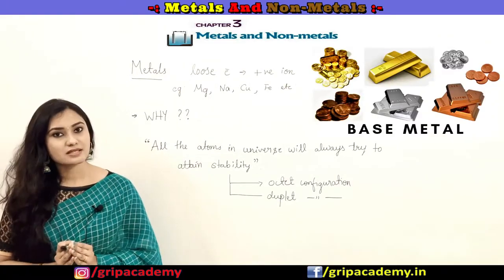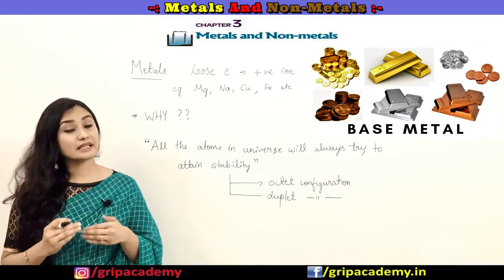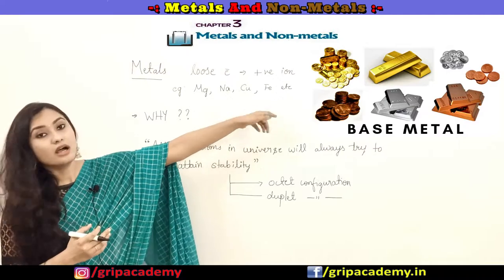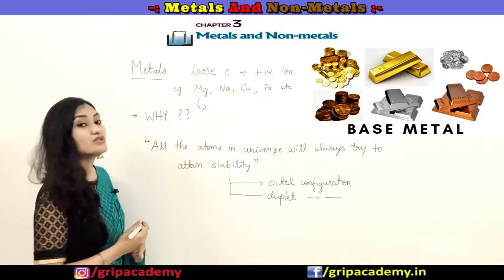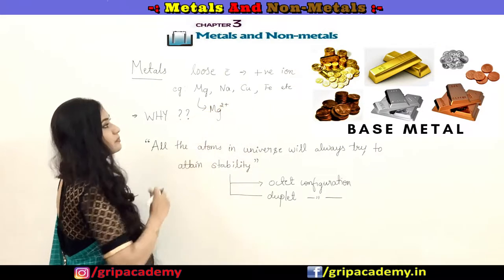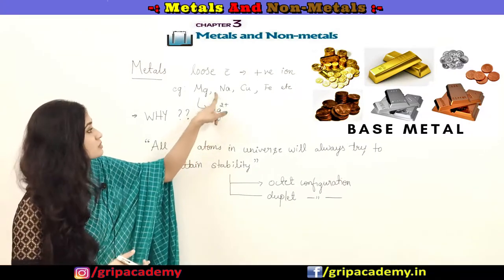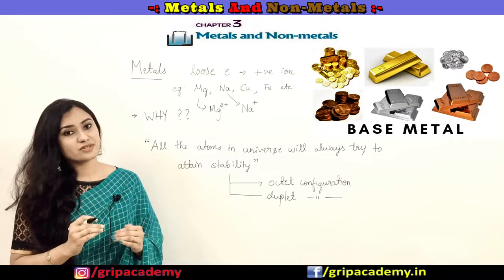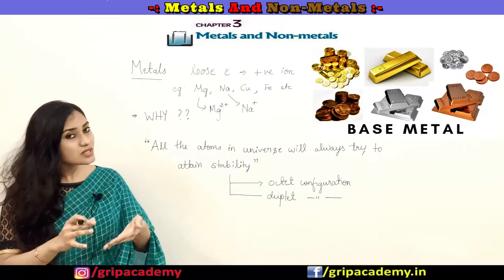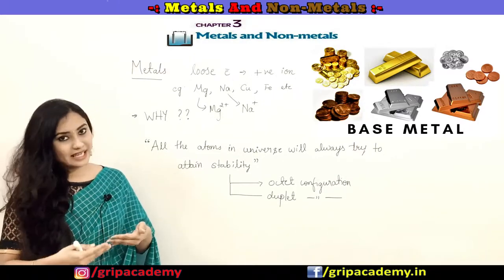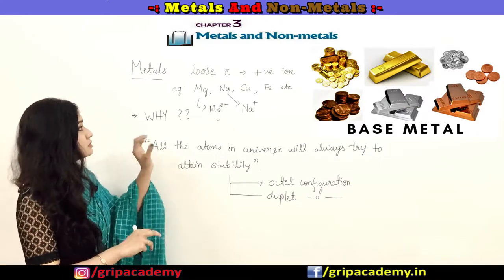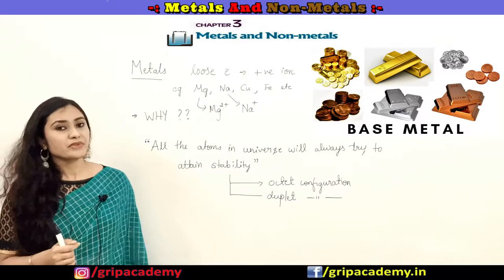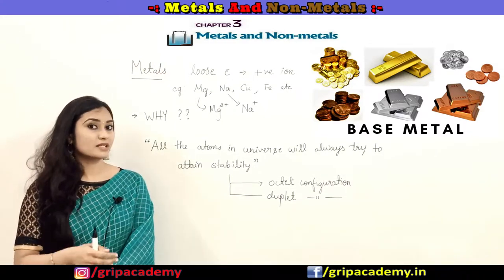Metals are those elements which will readily lose electrons and become positively charged ions — for example, magnesium, sodium, copper, iron. Magnesium will lose two electrons and become Mg²⁺, and sodium will lose one electron and become Na⁺. In chemistry, metals are defined as elements which give electrons to attain stability. A question arises: why do they lose electrons? We will also discuss non-metals — whether they lose or gain electrons.